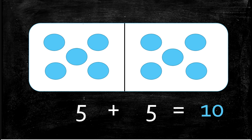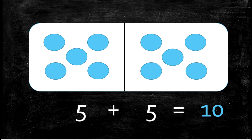Our next double is 5 plus 5 equals 10. So we have 5 — 1, 2, 3, 4, 5 — and we add 5 more, for how many all together? 1, 2, 3, 4, 5, 6, 7, 8, 9, 10. So if you had 10 Skittles and you had 5, you could give your friend 5 and split them evenly. 5 plus 5 equals 10.